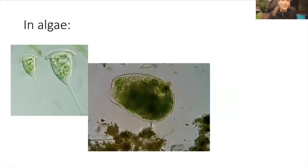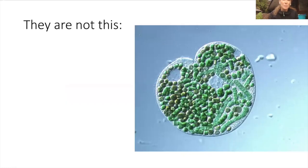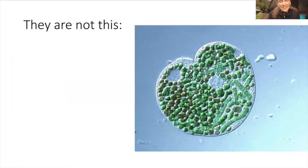In algae it's very, very common - heterotrophs take up some photosynthetic cells. But endosymbionts are not this: here is a predatory heterotrophic ciliate, and it is chock-a-block full of single-celled photosynthetic organisms. The ciliate is eating them - it's going to digest them all - and that's not endosymbiosis. That is just heterotrophy, just engulfing them and digesting them.